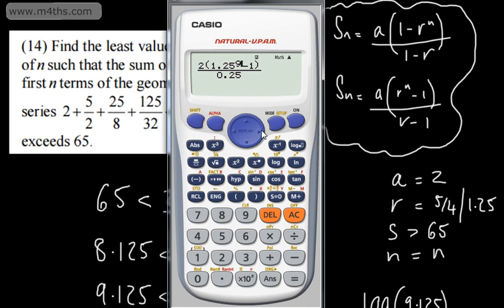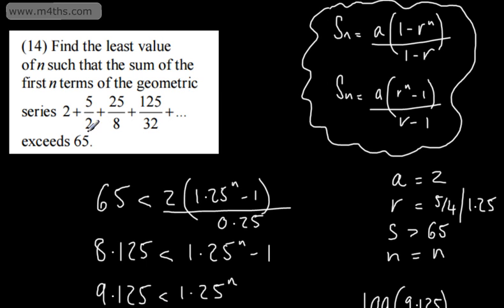And then, of course, if we now put 10 in, there we go, 66.5. So, we need n to be 10, so that it exceeds 65.